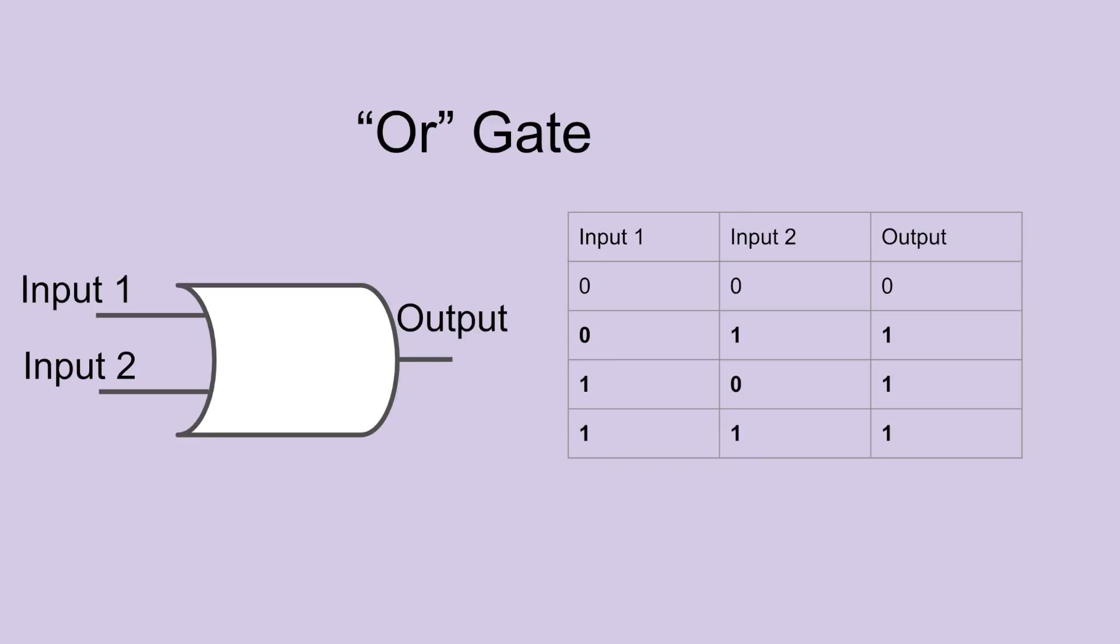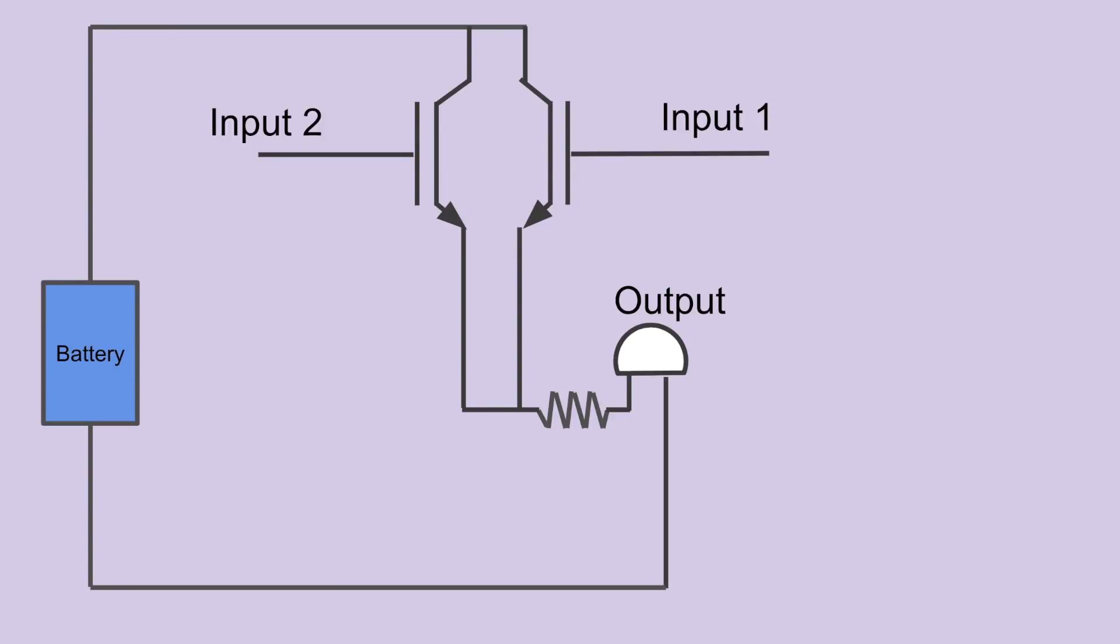The circuit might look something like this. If both switches are open, the current has no path to the light bulb. But if either one or both are open, then the current can reach a light bulb.